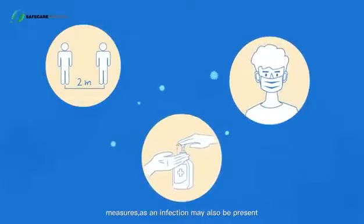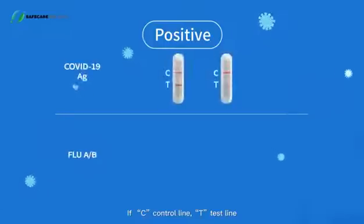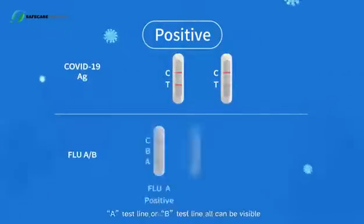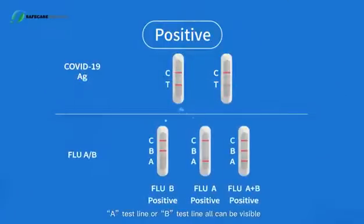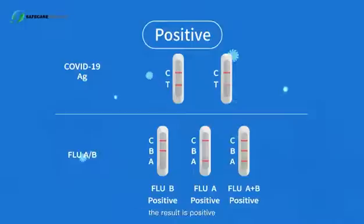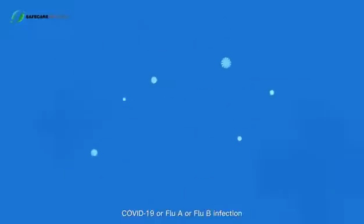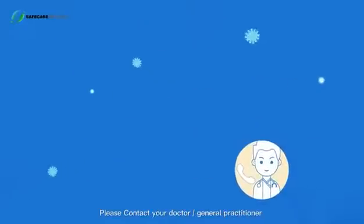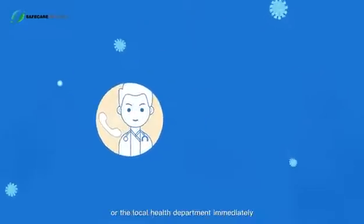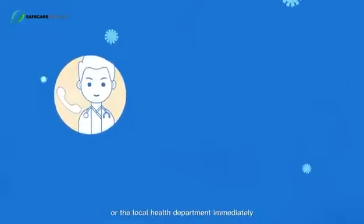If the C control line, T test line, A test line, or B test line are all visible, the result is positive. You may currently have a COVID-19, Flu A, or Flu B infection. Please contact your doctor, general practitioner, or the local health department immediately.